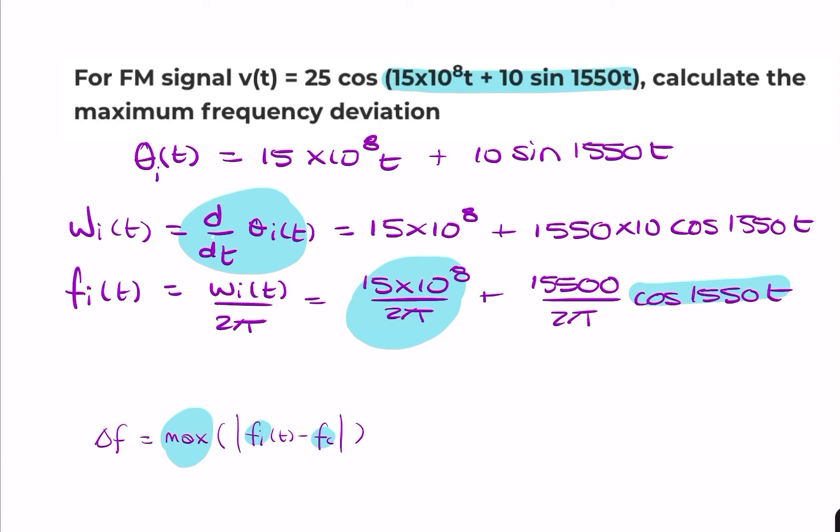So the value for delta f is simply going to be 1550 divided by 2π.